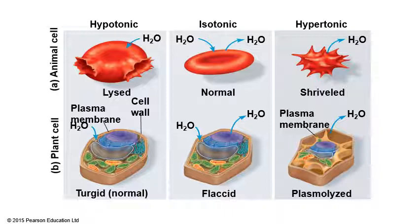An animal cell in an isotonic solution has water going in and out about equally, so there is no net movement of water — the cell stays normal. In a hypertonic solution, the animal cell loses water like kimchi cabbage in salty water — it gets shriveled and will eventually die.